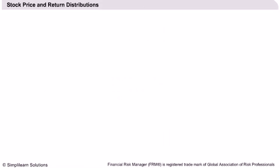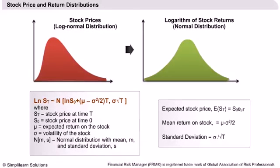Let us begin our session by first learning about stock price distributions. We have earlier studied that the stock price follows a log-normal distribution. A log-normal distribution is shown in the slide — it has a positive skew. The property of a log-normal function is such that its logarithm follows a normal distribution, as shown in the second chart.